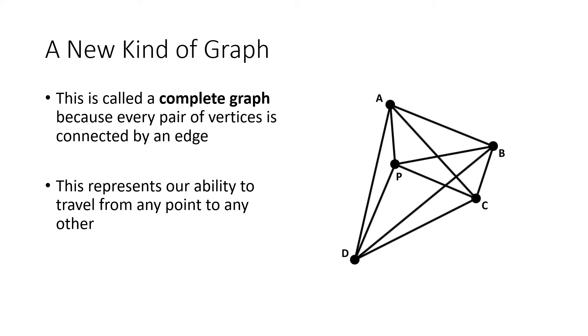So not every graph is going to be a complete graph, but in these Hamiltonian circuit problems, usually we're going to be talking about complete graphs. And the completeness of the graph represents the idea that we can go from any location to any other location.